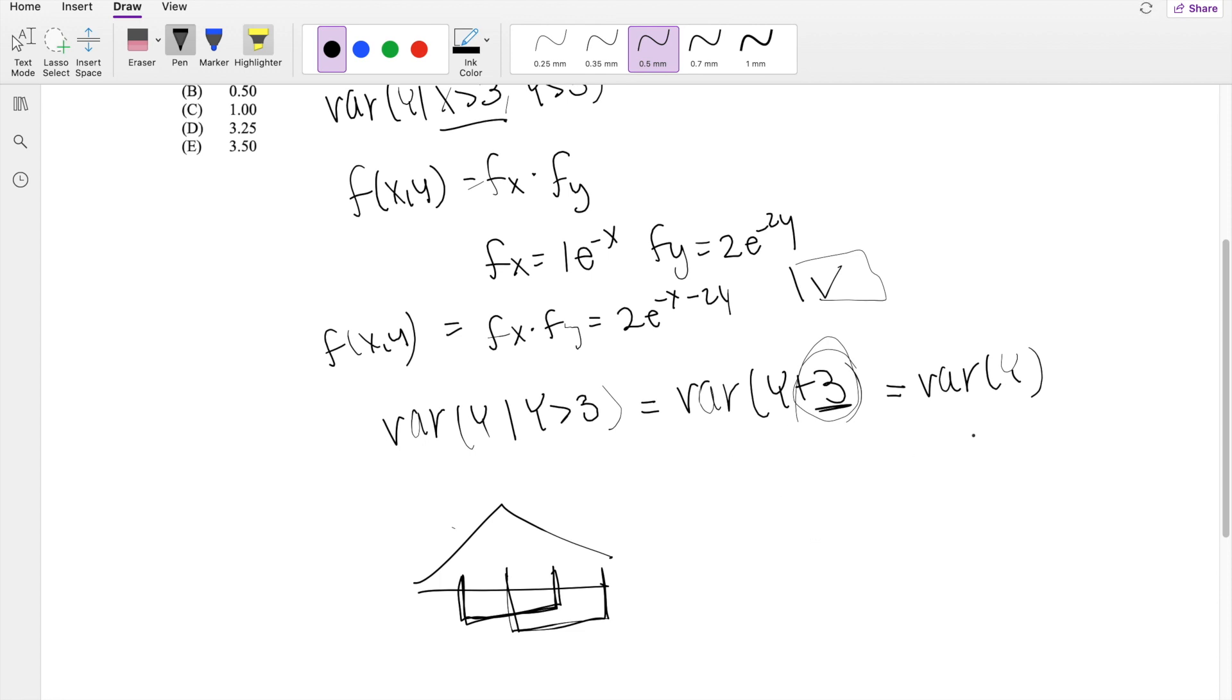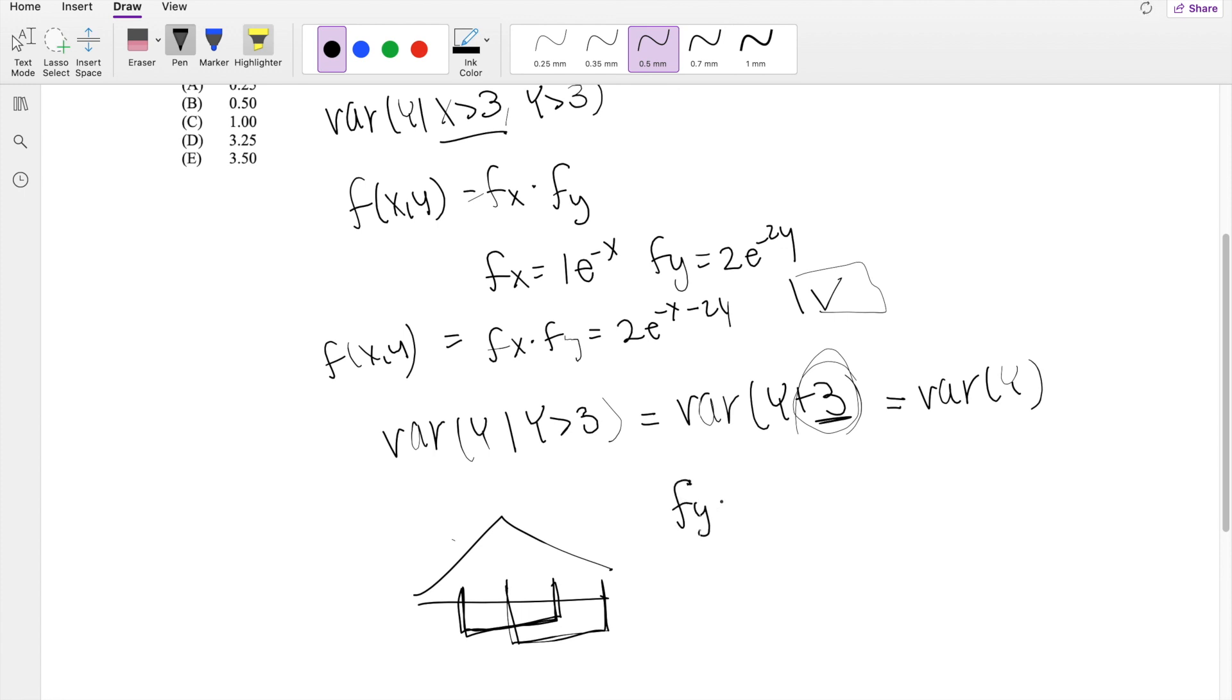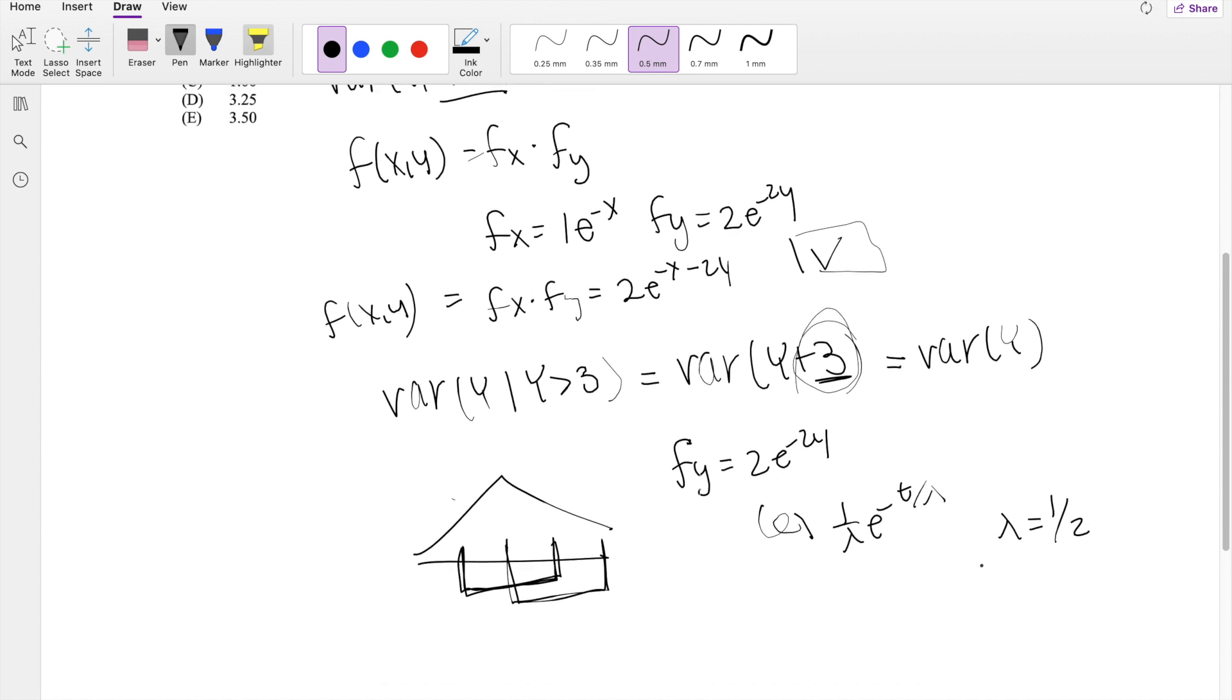And then when you're asked to find the variance of y, this becomes a really simple problem. And especially because we know what f of y is. We know f of y is equal to 2e to the negative 2y, right? Which has the same form as 1 over lambda e to the negative t over lambda, where lambda is equal to 1 half.